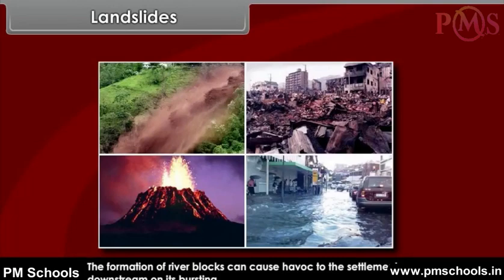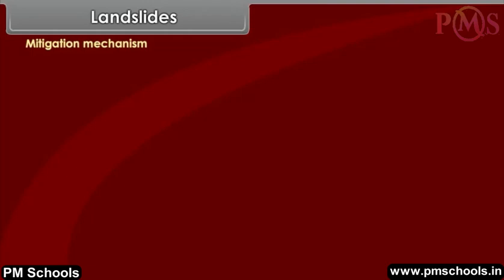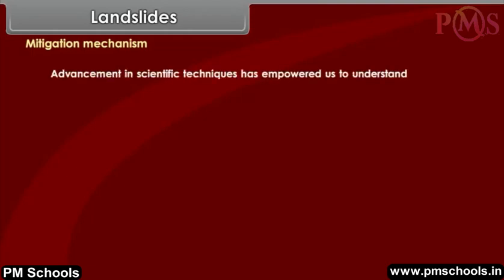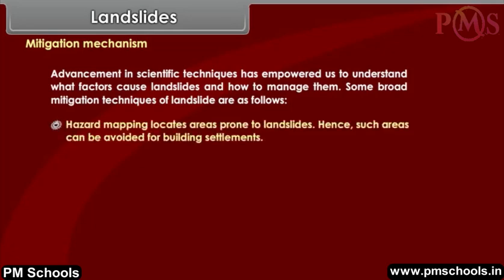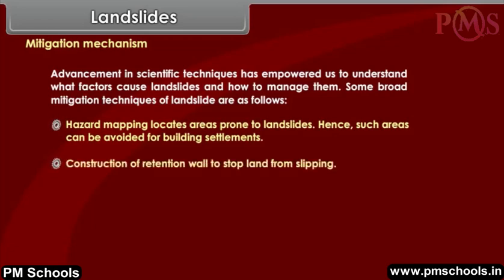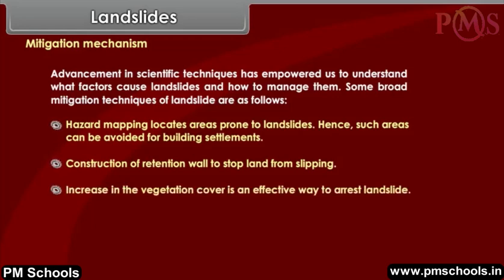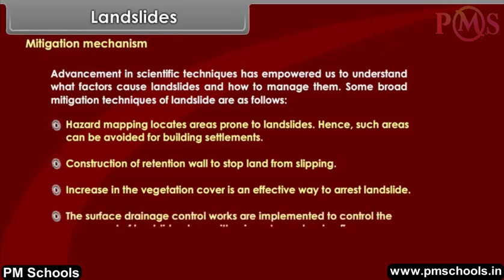Advancement in scientific techniques has empowered us to understand what factors cause landslides and how to manage them. Some broad mitigation techniques for landslides are: hazard mapping, which locates areas prone to landslides so such areas can be avoided for building settlements; construction of retention walls to stop land from slipping; increasing vegetation cover as an effective way to arrest landslides; and surface drainage control works to control the movement of landslides along with rainwater and spring flows.